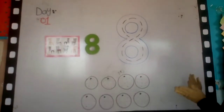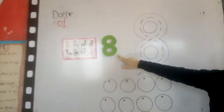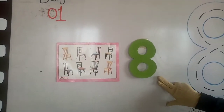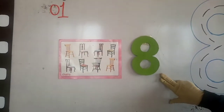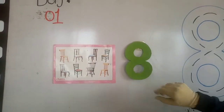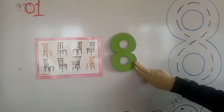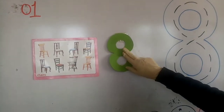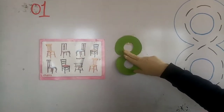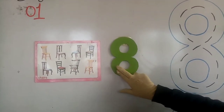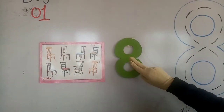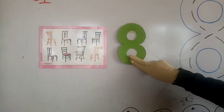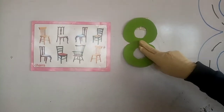Look at the board. Which number is this? Do you know which number is this? Eight. Which number is this? Eight. Okay, how do we write eight? Round and round. Eight. Round and round. Eight.